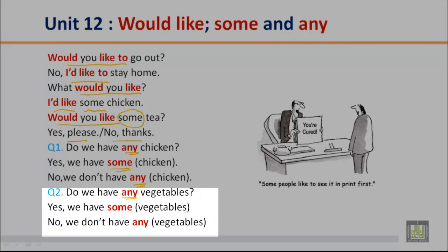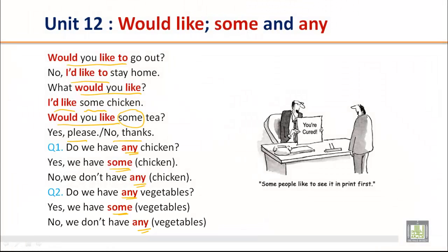Do we have any vegetables? Yes, we have some vegetables. No, we don't have any vegetables. I hope you have got enough idea about the use of countable and uncountable nouns and the use of 'would like', 'some', and 'any'. You need more practice — practice makes a man perfect. I hope you enjoyed all the units in Book One. Thanks for being with me, see you in the next class, have a nice time.